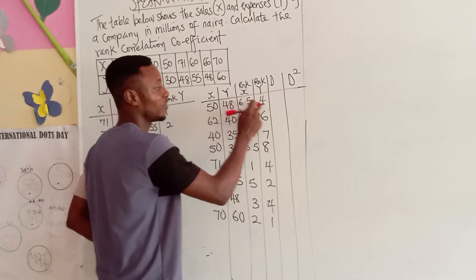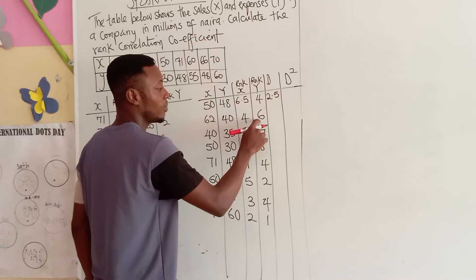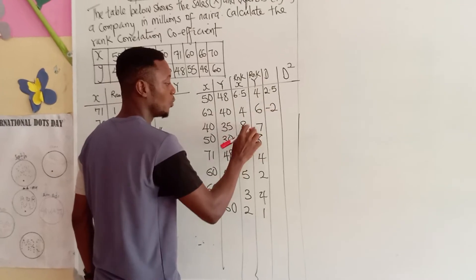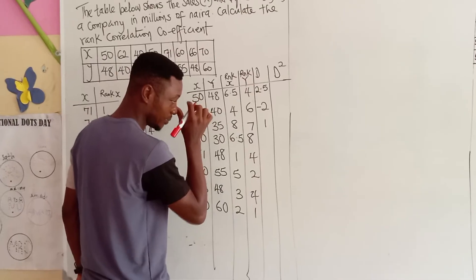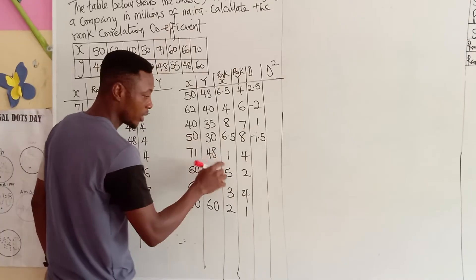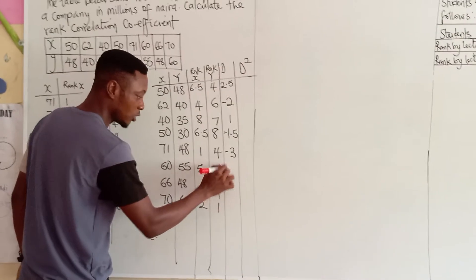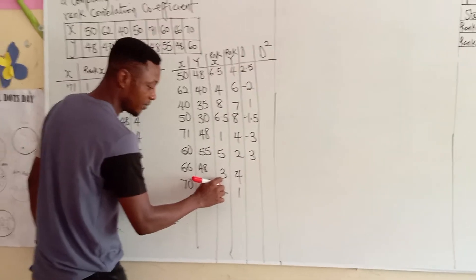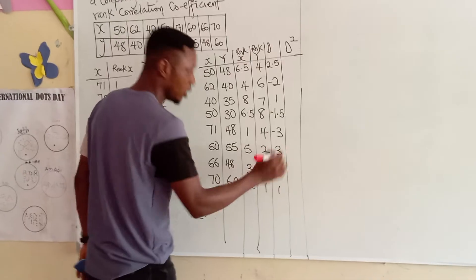D stands for difference. 6.5 minus 4 will give me 2.5. 4 minus 6 will give me minus 2. 8 minus 7 is 1. 6.5 minus 8 will give me minus 1.5. 1 minus 4 will give me minus 3. 5 minus 2 is 3. 3 minus 4 is minus 1. 2 minus 1 is 1.